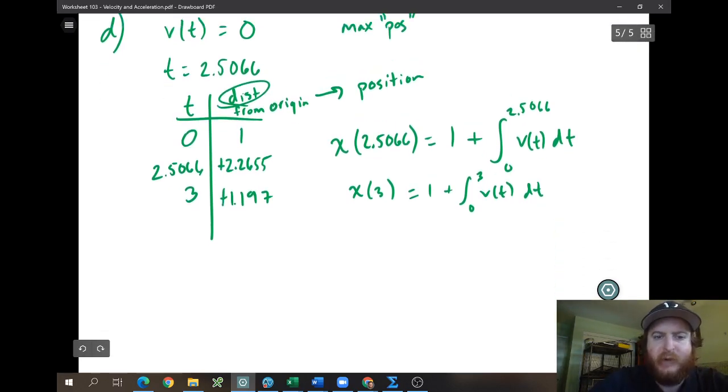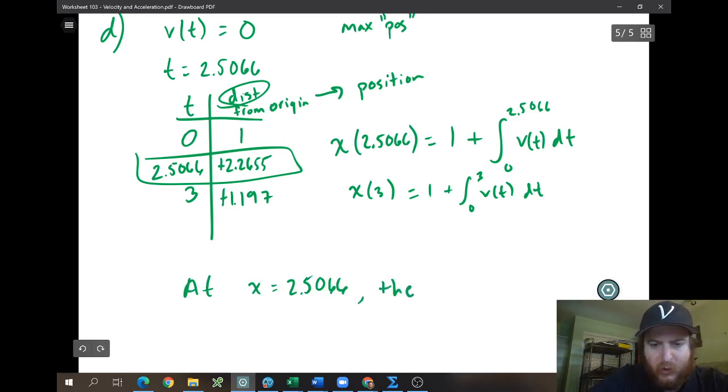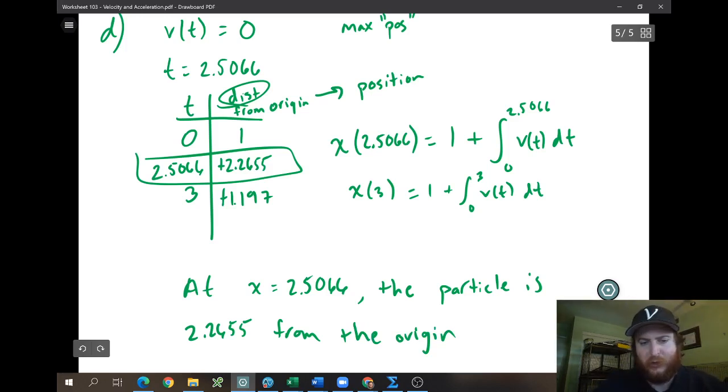But what's going to happen is that the distance from the origin is just going to turn those numbers positive. So the furthest it's ever away from the origin is at this point. So at, you know, X equals 2.5066, the particle is 2.2655 from the origin. We don't put units because they did not give us units, right? This sentence would make more sense with units like 2.26 feet or meters or inches, but they didn't give it, so we don't report it.